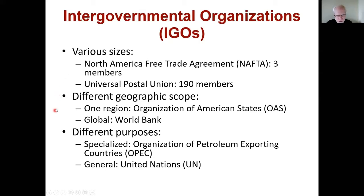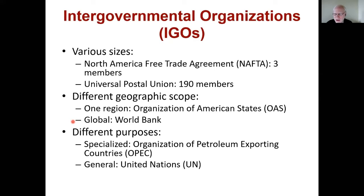We can also look at different geographic scope. Some organizations are focused in one region — for example, the Organization of American States in the Americas, the European Union in Europe, and APEC in the Asia Pacific. These deal with issues that are more regionally focused rather than global issues. And then we have many global international organizations that deal with issues spanning the entire world, such as the World Bank and the UN.